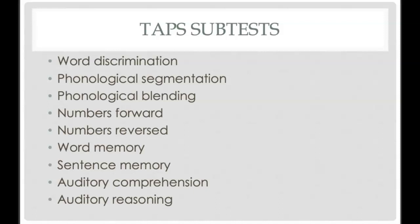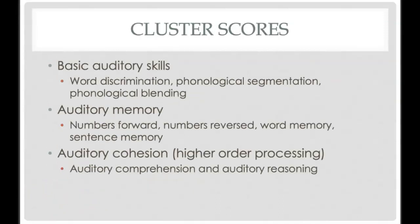That's why controversy has always existed around APD testing — nothing is purely auditory if it has a memory or phonological or language component. The only way to test pure auditory function is to use signals like white noise or other noise types without a language component. The TAPS III also includes word memory, sentence memory, auditory comprehension, and auditory reasoning, organized into clusters: basic skills, auditory memory, and auditory cohesion — which is a higher-order process involving comprehension and reasoning.